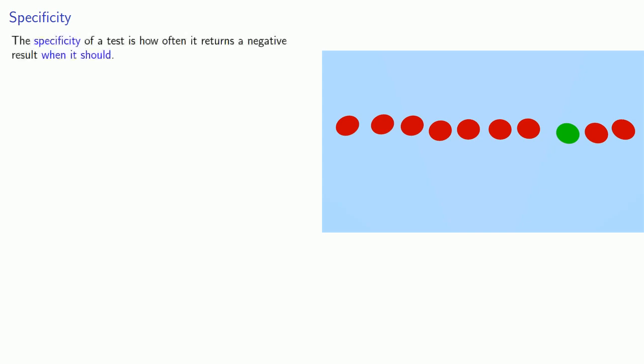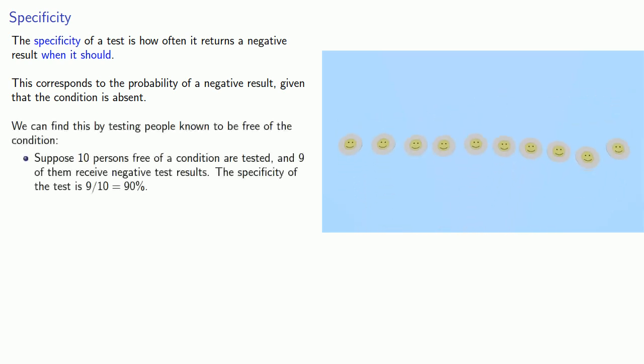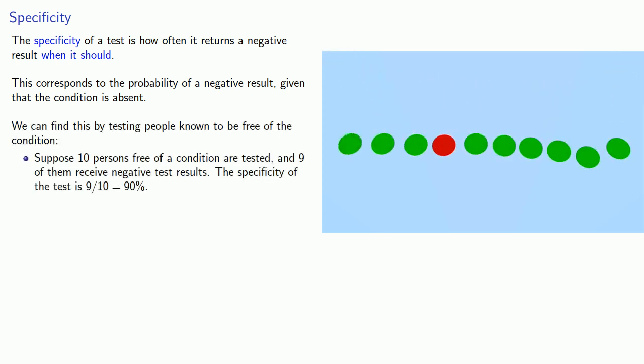The other factor is the specificity of a test. The specificity of a test is how often it returns a negative result when it should — this corresponds to the probability of a negative result given that the condition is absent. Suppose 10 persons free of a condition are tested, and 9 of them receive negative test results. The specificity of the test is 9 out of 10, or 90%.